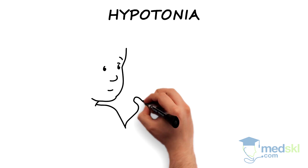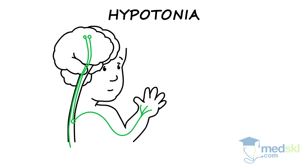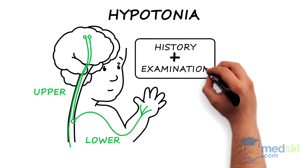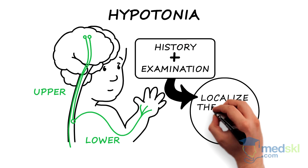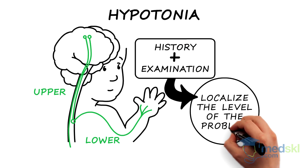In infants, hypotonia is seen in both upper and lower motor neuron lesions. A neurologic history and examination will allow you to localise the level of the problem.